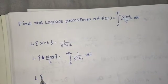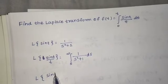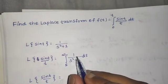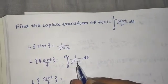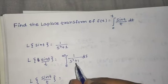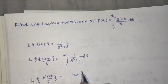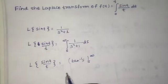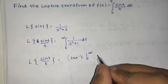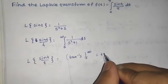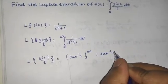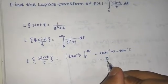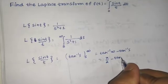So the Laplace of sin(t)/t gives us the integral of 1/(1 + s²), which on integration gives tan⁻¹(s) evaluated from s to infinity. This is tan⁻¹(∞) minus tan⁻¹(s), and since tan⁻¹(∞) = π/2, we get π/2 minus tan⁻¹(s).